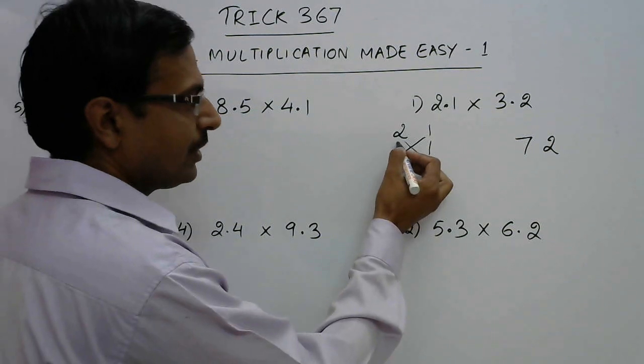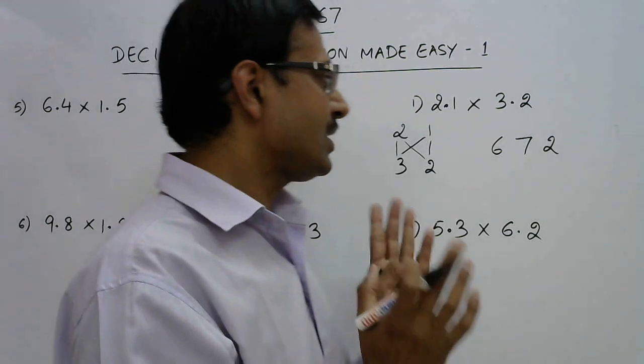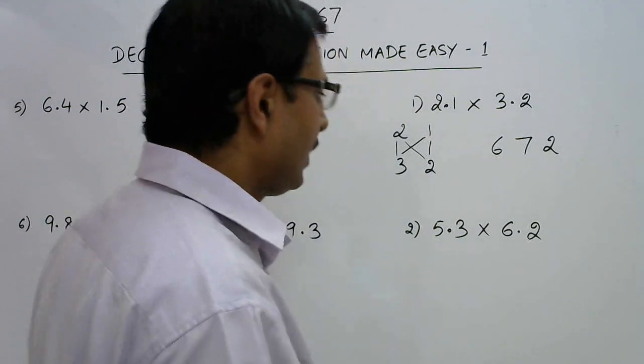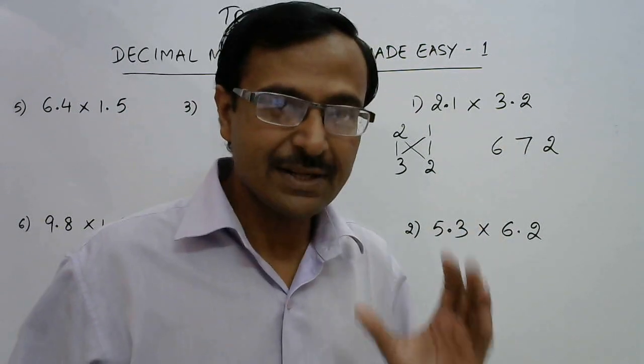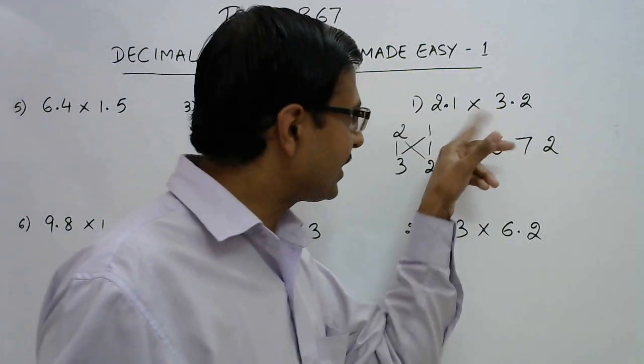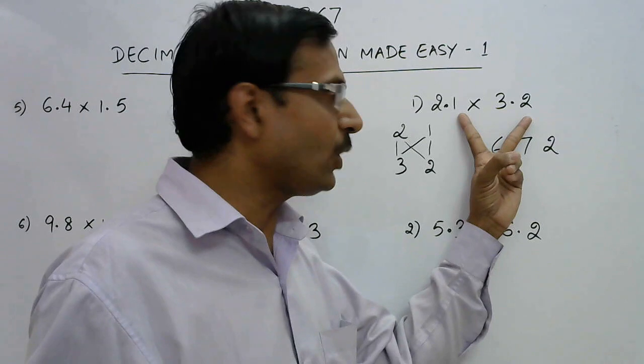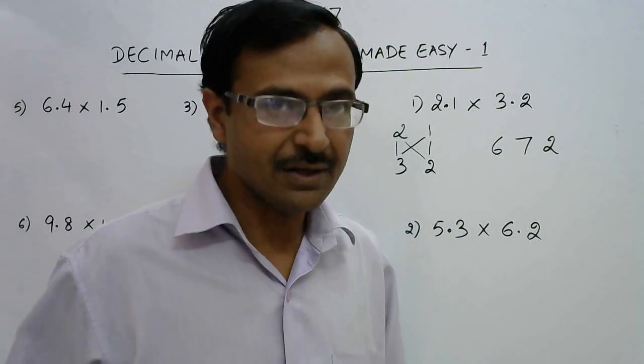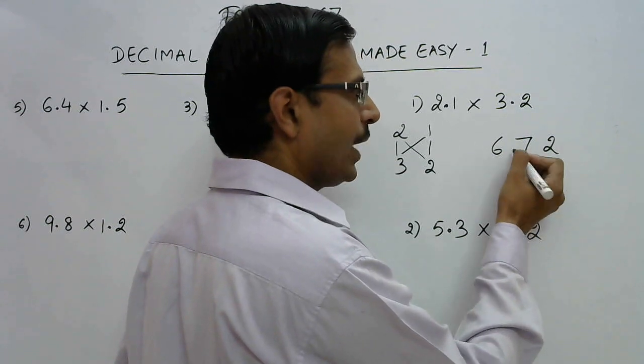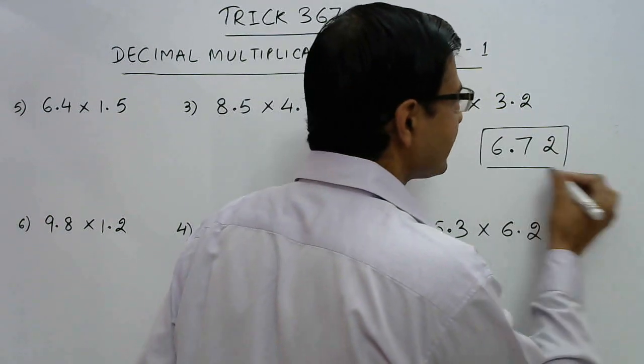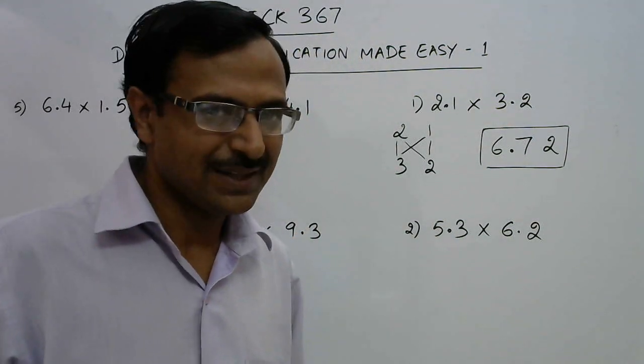And finally we have the multiplication of tens digits 2 into 3, 6. Now see we have obtained 6, 7, 2 and whenever the numbers are in decimal just count the number of decimal places after the decimal. So we have one digit after the decimal here and one digit after the decimal here. So in all there are two digits after the decimal. So from the right side just count two digits 1, 2 and put a decimal you get your final answer. 2.1 into 3.2 is 6.72. Isn't that easy?